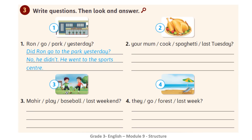Now let's do activity three together — write questions, then look and answer. The first one is done for us: 'Did Drone go to the park yesterday?' Now look at the picture. No, he didn't. He went to the sports center.